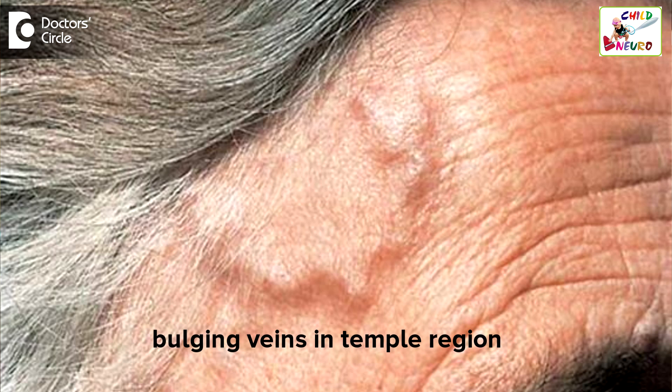Bulging veins and pulsation in the temporal area can be due to many reasons. You need to evaluate clinically what the possibilities are. You need to see whether it is on one side or both sides of the scalp, and also find out whether it is associated with pain or not. If it is associated with pain, you should think of a local problem like any local injury, and sometimes it may be due to vasculitis also.